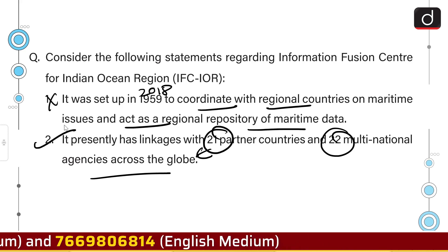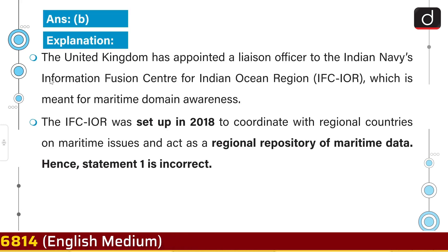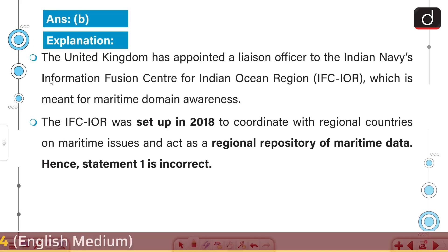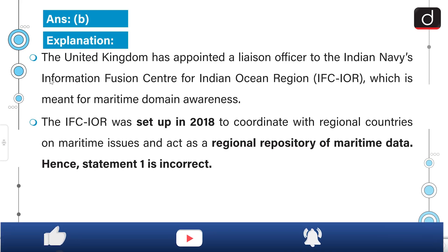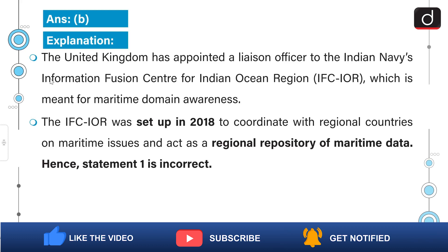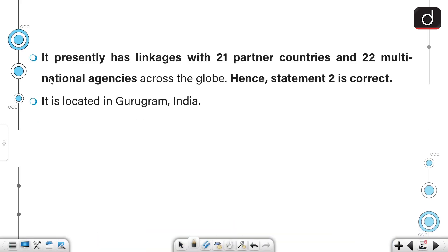The second statement is correct. So the correct answer is option B — only two. The UK has appointed a liaison officer to the Indian Navy's Information Fusion Centre for Indian Ocean Region, which is meant for maritime domain awareness. It is located in Gurugram, India.